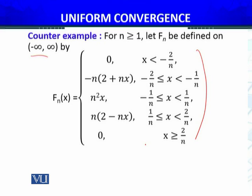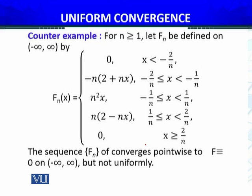Iski humne uniformly convergence jo hai, woh check karna hai. Ke uniform convergence hai, ya nahi. The sequence f_n of functions converges pointwise to f equal 0 on minus infinity to infinity, but not uniformly. Ab ye uniformly kiyo converge nahi kerta hai? Isko hum dekh lete hain.